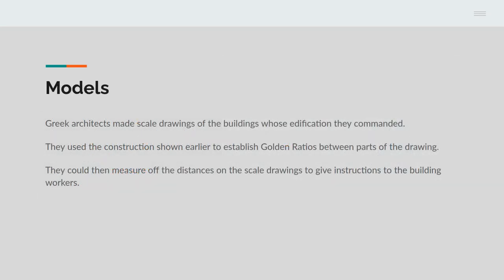Now, the Greek architects used to make scale drawings of their buildings before they were put up. And they used the construction shown earlier to establish the golden ratios between the parts of their drawing. They could then measure off the distances on the scale drawings to give instructions to the building slaves.